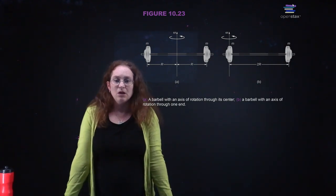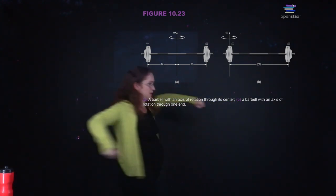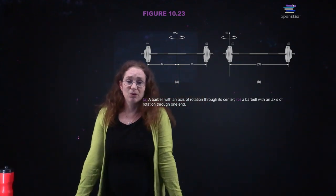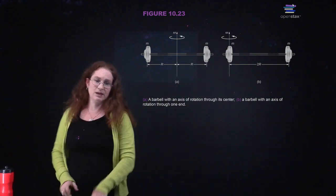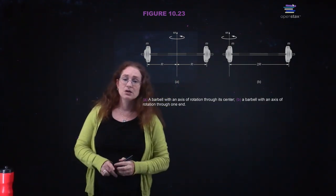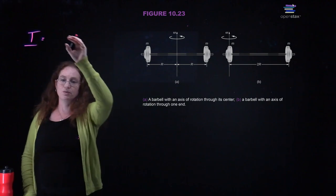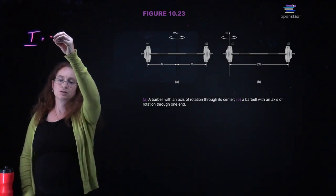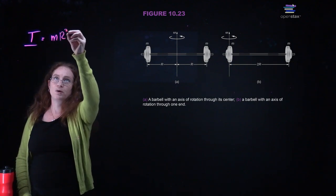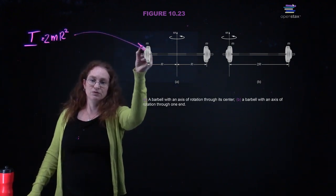Here you have a barbell with an axis of rotation through its center. You have two weights, rotating like this — or you're holding weights and you decide to spin. That will have one moment of inertia. We can calculate these in two different ways. The moment of inertia about the center of mass is m r² plus m r², or 2mr².